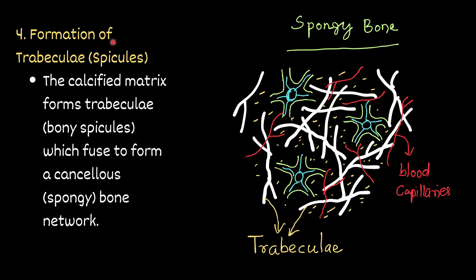Step four — formation of bony trabeculi and spicules. The calcified matrix forms trabeculi and bony spicules, which fuse together to form a cancellous or spongy bone network. The calcified matrices fuse with each other to form bony spicules and trabeculi, and further fuse to form cancellous or spongy bone.